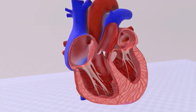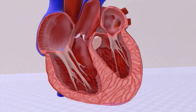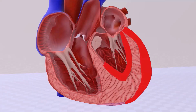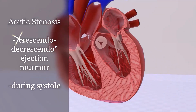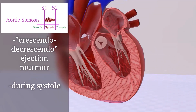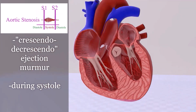Now let's talk about pathology, starting with aortic stenosis — a blockage in the aortic valve where blood can't properly get from the left ventricle through the aorta. This leads to hypertrophy of the left ventricle. The murmur has a crescendo-decrescendo ejection pattern, reflecting changing blood speed as it is ejected through the valve, and it occurs during systole.